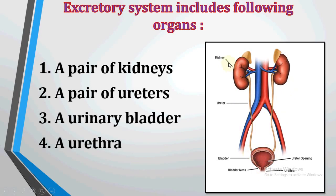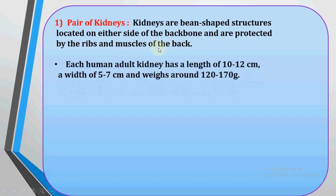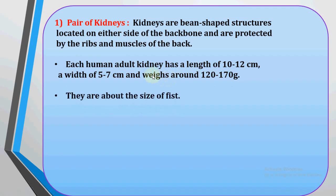The main parts of this system are the kidney, ureter, urinary bladder, ureter opening, bladder neck, and urethra. Kidneys are a bean-shaped structure located on either side of the backbone, protected by the ribs and muscles of the back. They are about the size of our fist. Each human adult kidney has a length of 10 to 12 cm and a width of 5 to 7 cm.